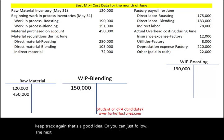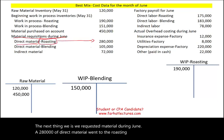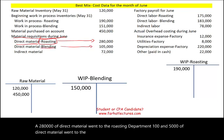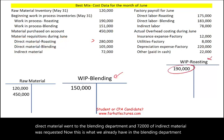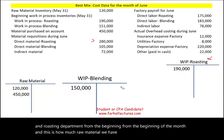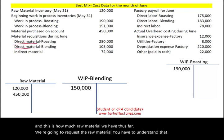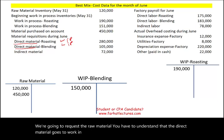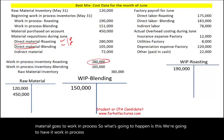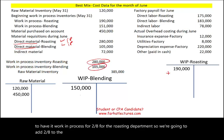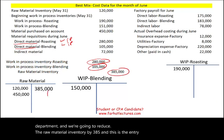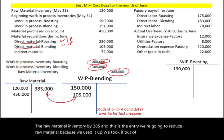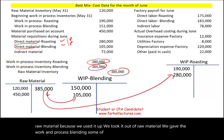During June, material was requested: $280,000 of direct material went to the roasting department, $105,000 of direct material went to the blending department, and $72,000 of indirect material was requested. Direct material goes to work in process — so we debit work in process roasting $280,000, debit work in process blending $105,000, and credit raw material inventory $385,000, reducing it because we used it up.